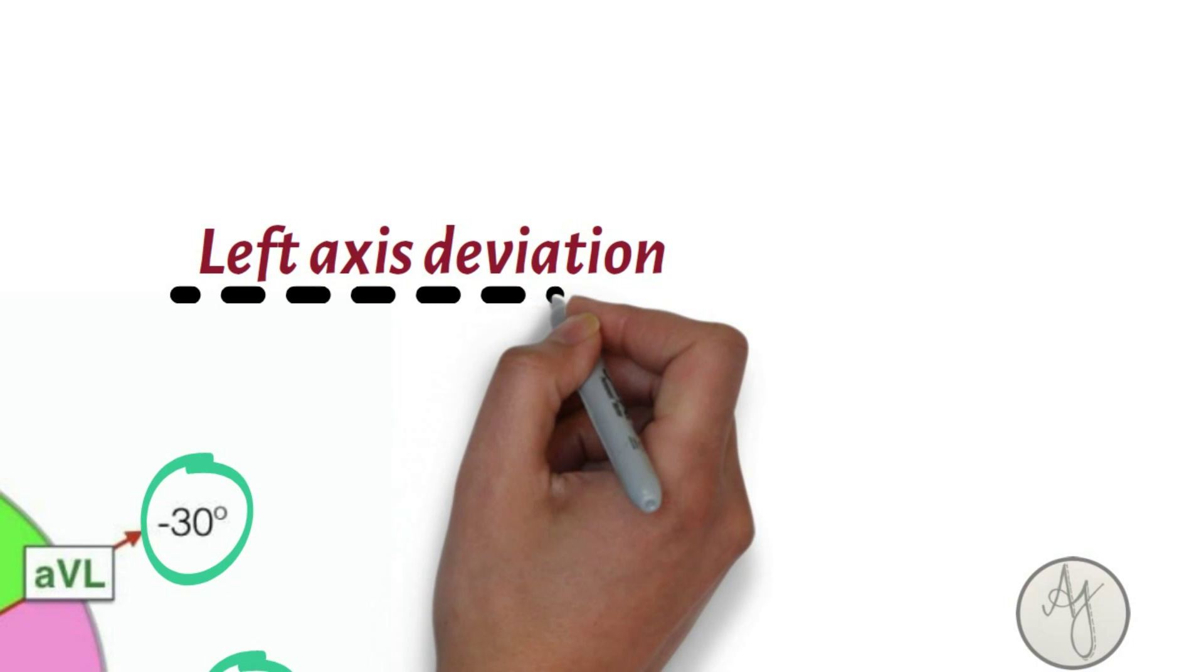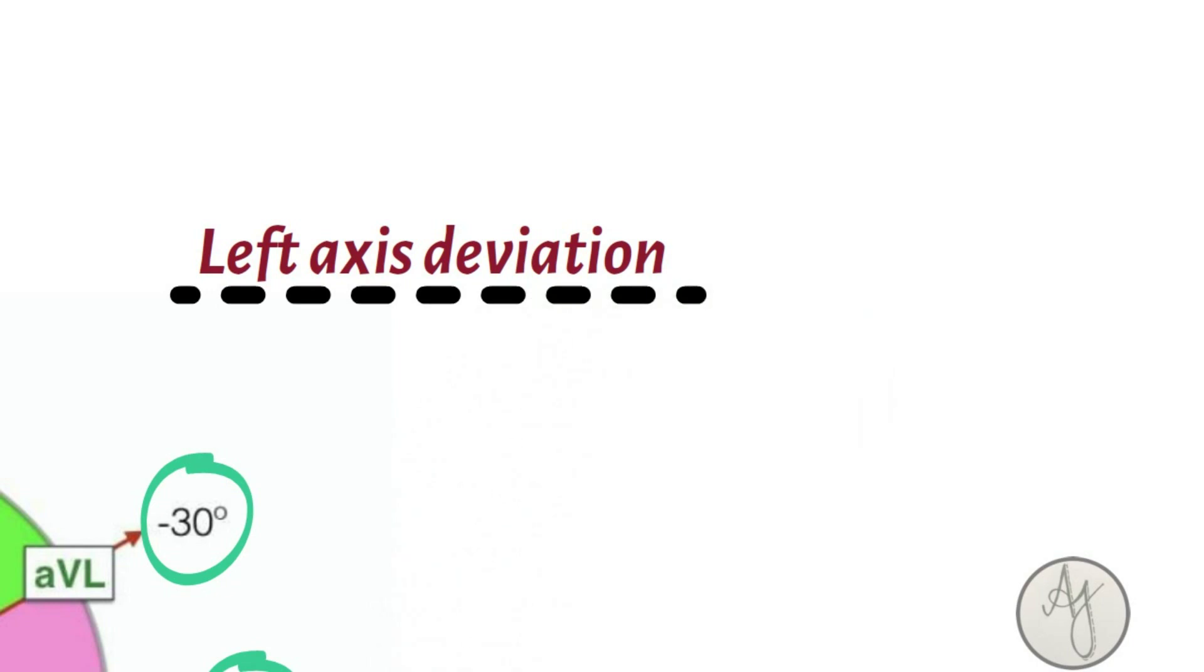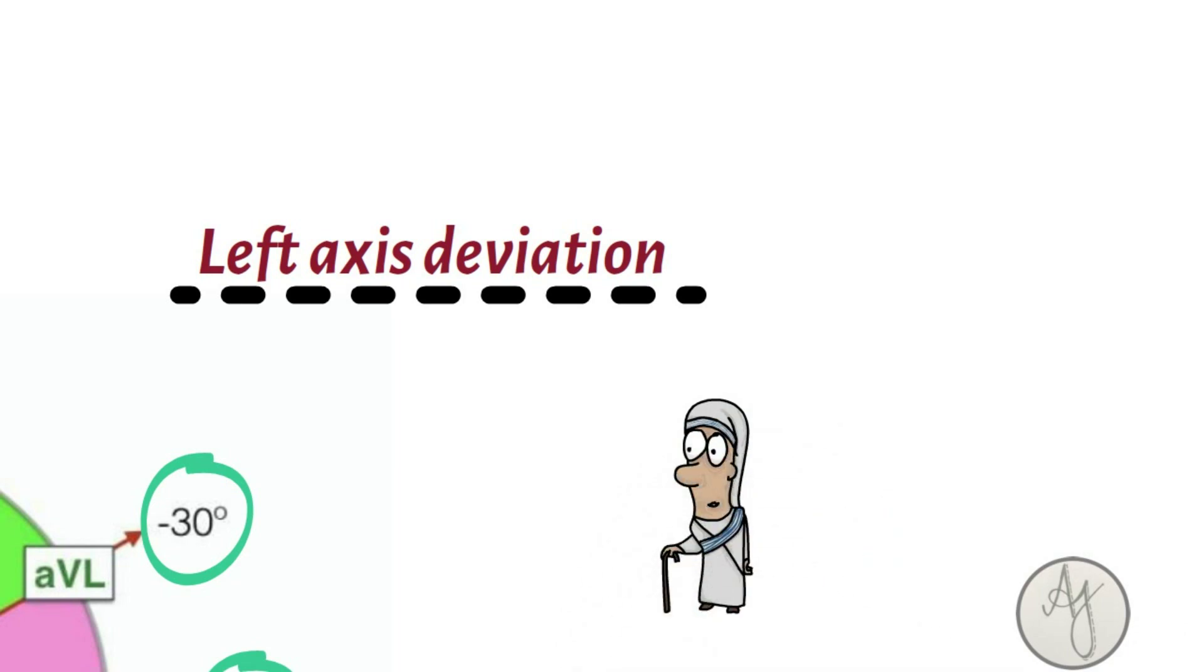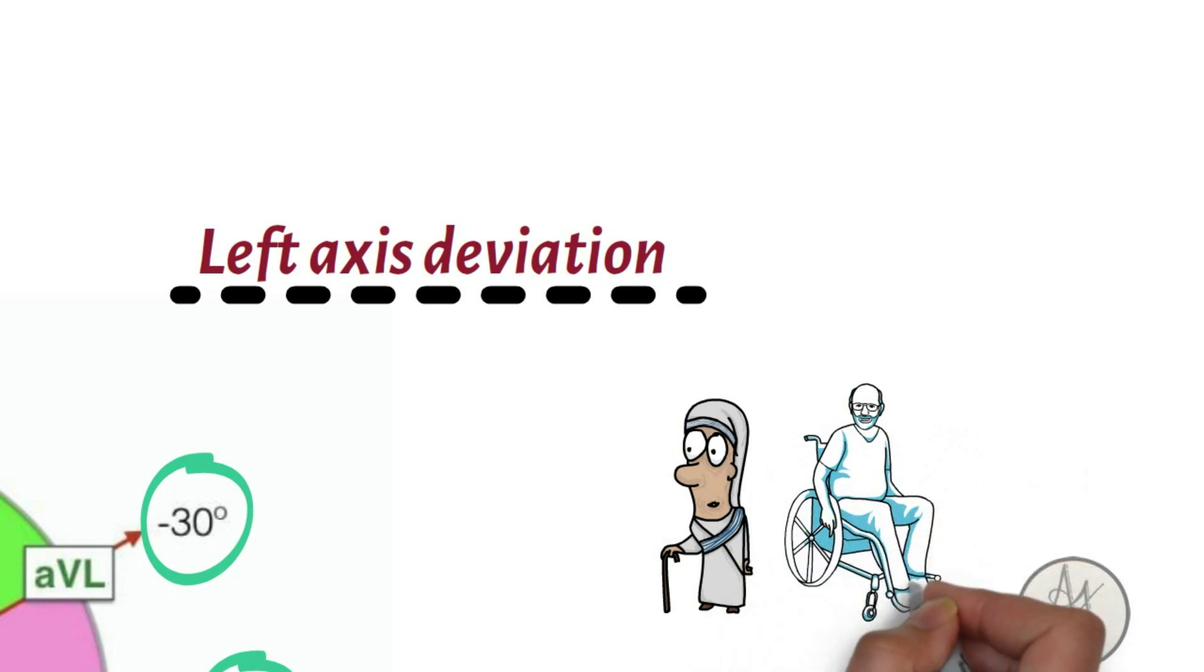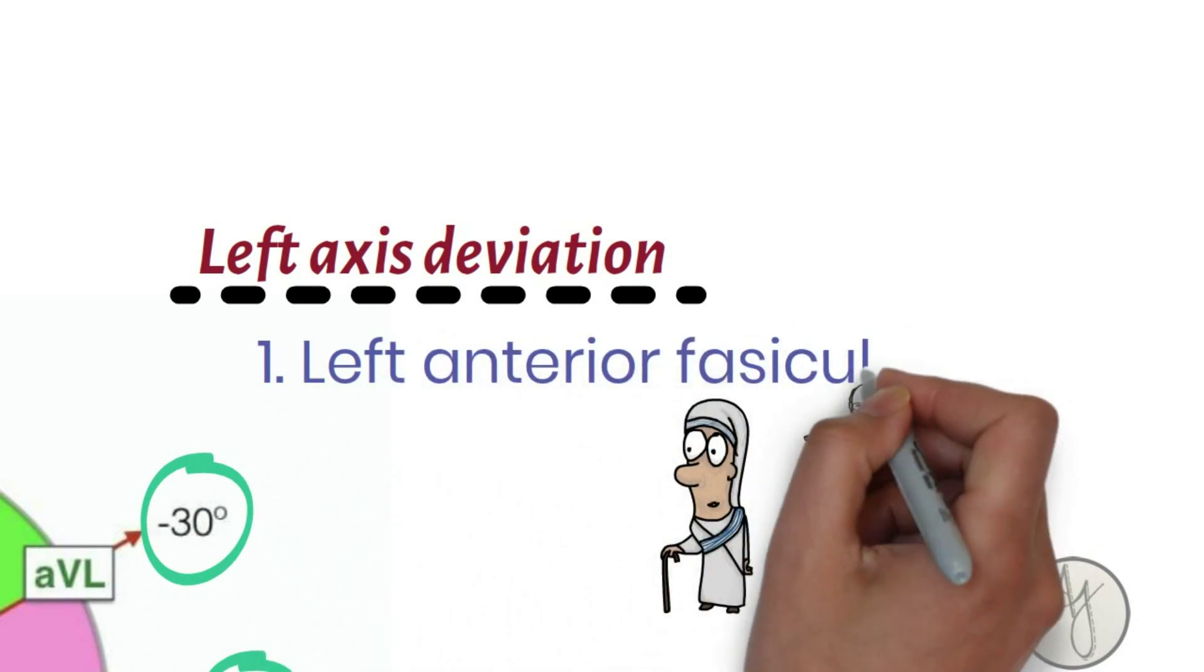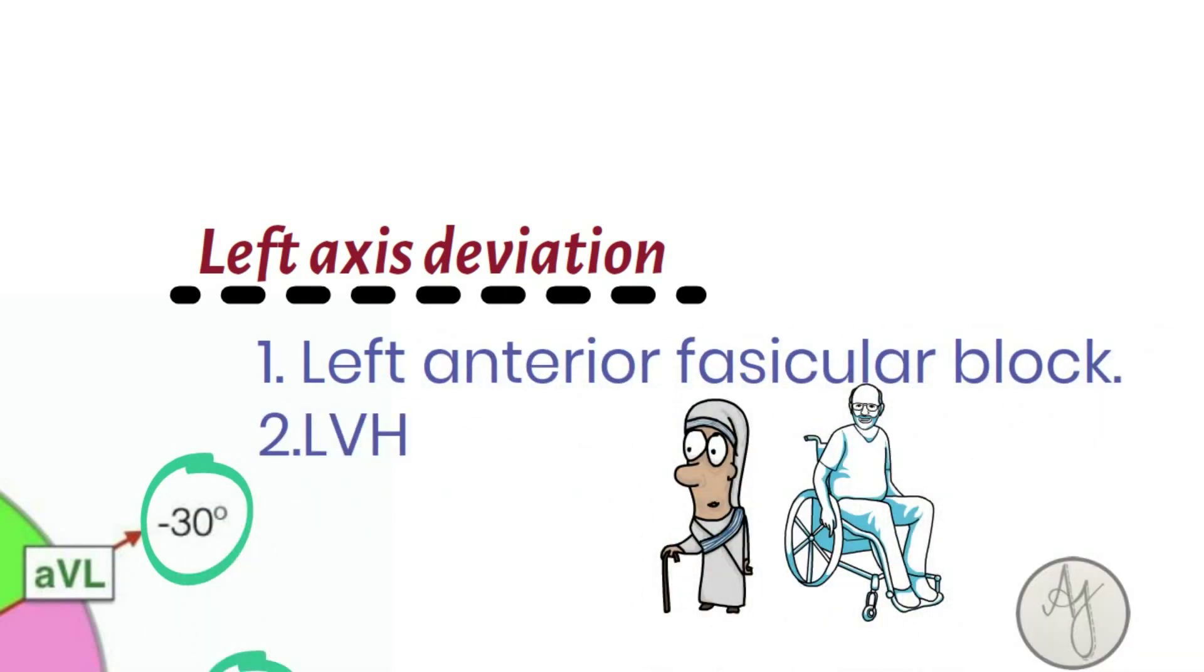But it's also physiological in elderly people, because as age progresses, the left ventricle tends to get hypertrophied. So abnormally, it can be present in left anterior fascicular block and left ventricular hypertrophy, like I mentioned.